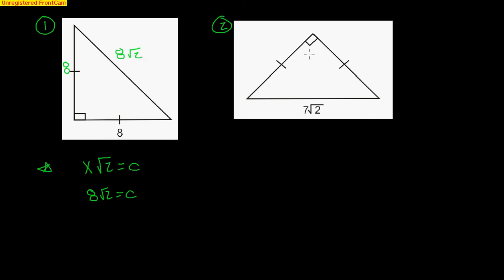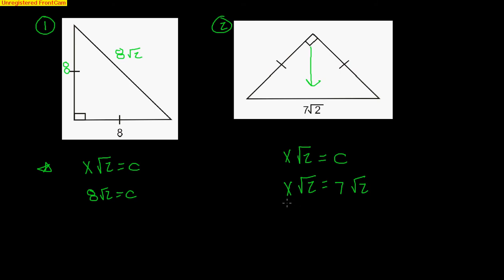This one is a little bit different because we actually know the hypotenuse — it's given as the side across that right angle. Again, always start with the formula. This time I'm looking for the X value, those other two sides, and C is 7√2. To solve for X, I divide both sides by √2, the √2s cancel, and I get X = 7. So the missing sides are both 7.